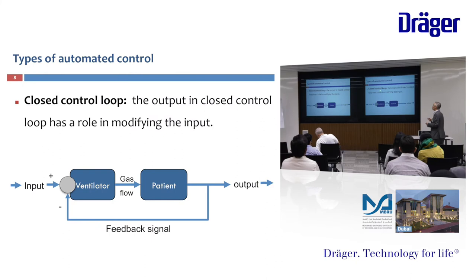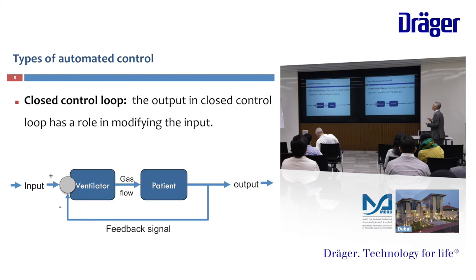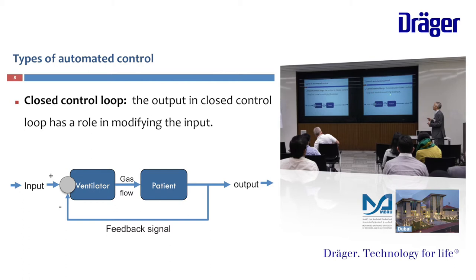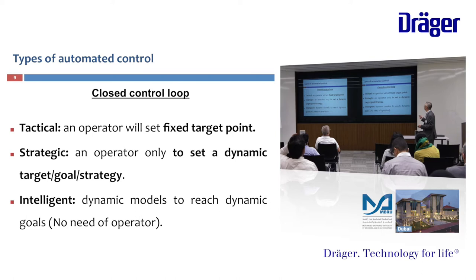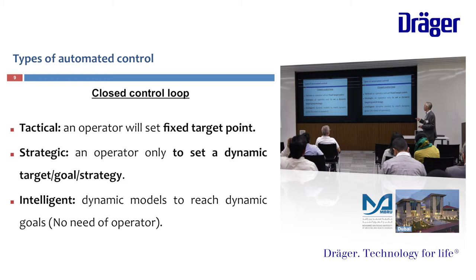While in the closed control loop, the output has a role in modifying the input by feedback signals — either positive or negative feedback. In the closed control loop, we have three types: tactical, in which the operator sets a fixed target; strategic, in which there is a dynamic target; and intelligent, in which we don't need an operator at all.